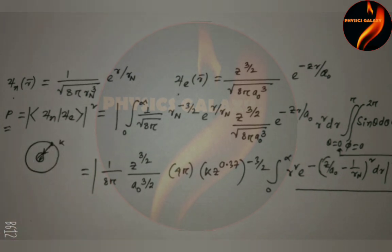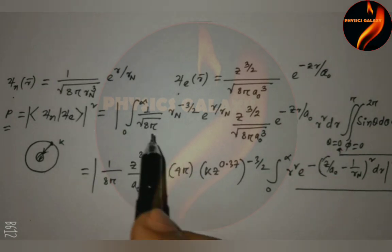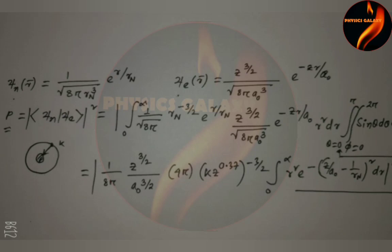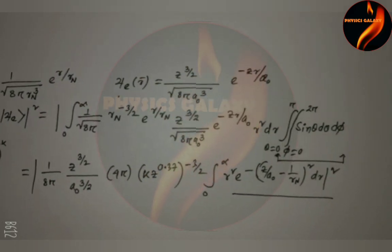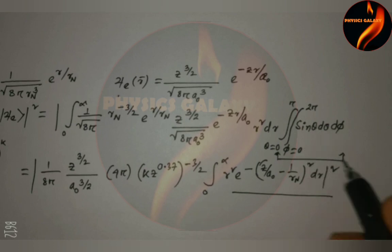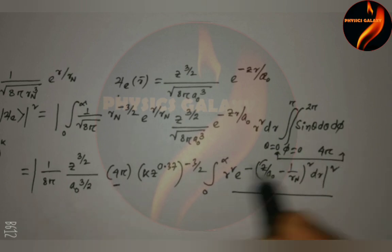This is the probability of electron capture by the nucleus. So we put the value of ψn and ψe, then we integrate the standard integral. This is the integration of sin θ dθ dφ. This value we know is 4π, the standard integral. So we put the value of 4π here.